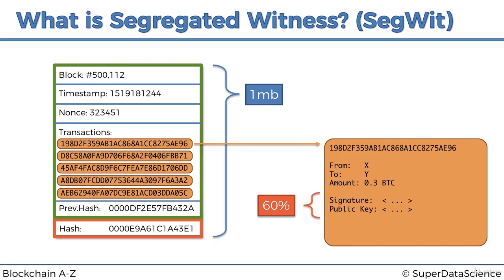The signature and public key end up taking up to 60 percent of the whole transaction size, yet they're not the main purpose of the transaction — they're just a verification and security mechanism. What was proposed was to take this heavy part, also called the scriptSig, remove it from the message, strip it out, and send it through its own separate messaging service on the network.